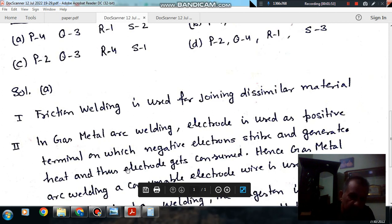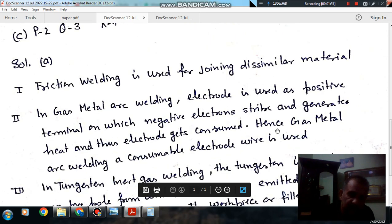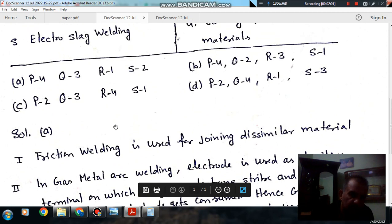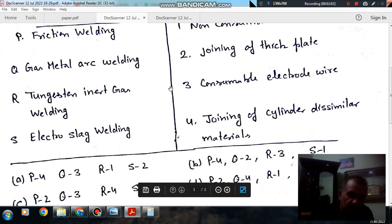emitted on the electrode, the electrode gets consumed. And so, gas metal arc welding uses a consumable wire welding. So Q is 3.